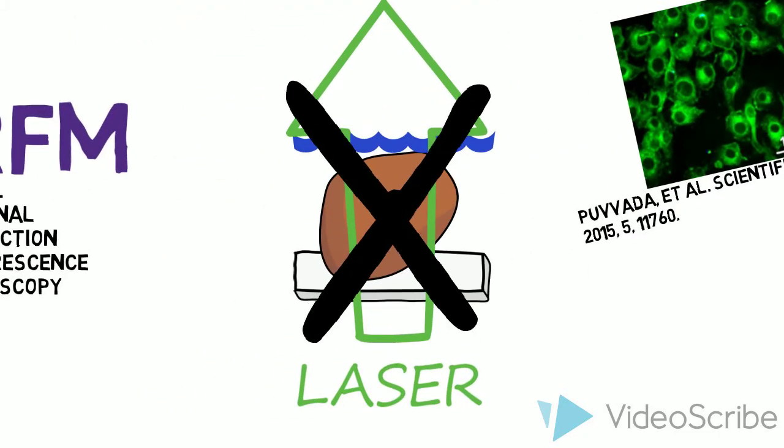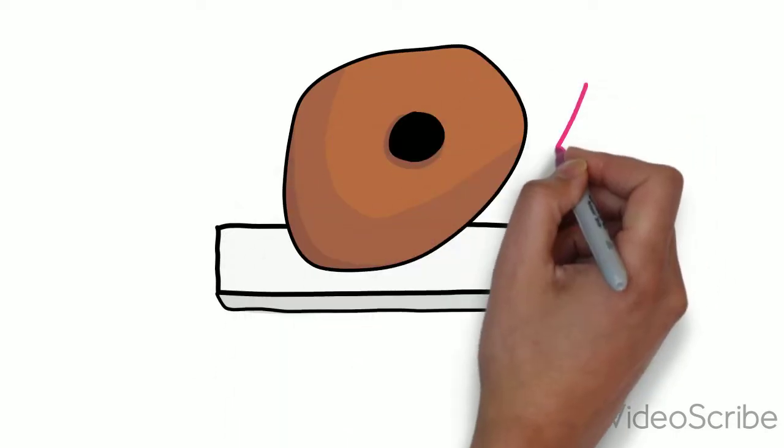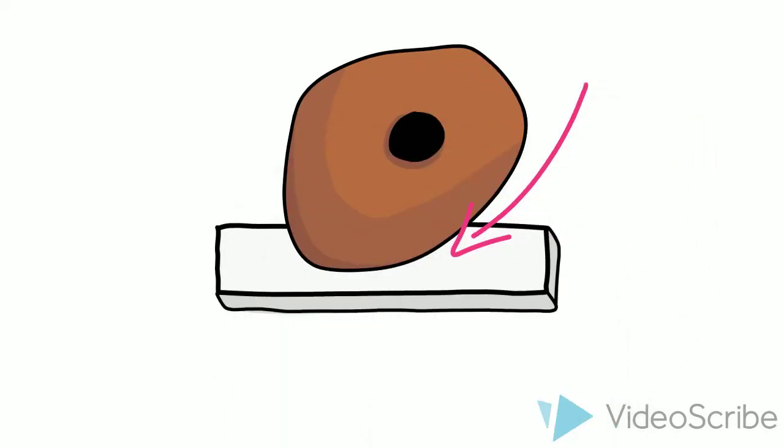Now, what happens if you aren't interested in the entire cell? What if you're only interested in the cell's interaction with the glass surface? Is the whole cell body stuck to the glass, or just a certain part of it?